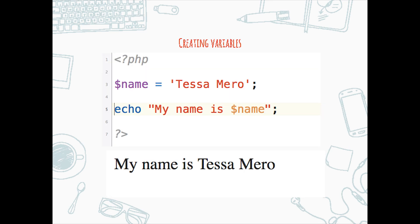Creating variables: if you use single quotes, your variable will not render. If you use double quotes, your variable will render. We have set the variable name to be Tessa Mero. The bottom screenshot is what the code will render to. See how easy that is?